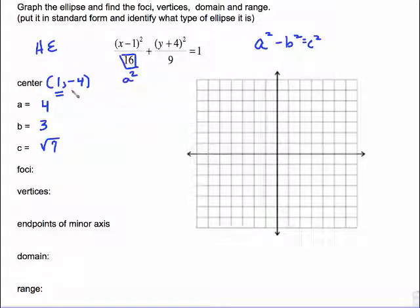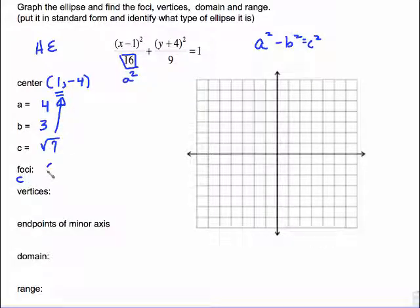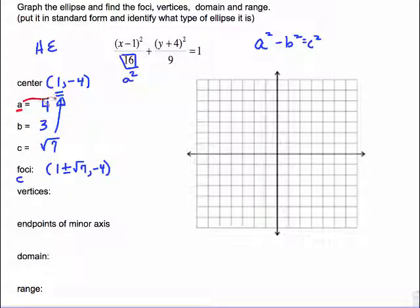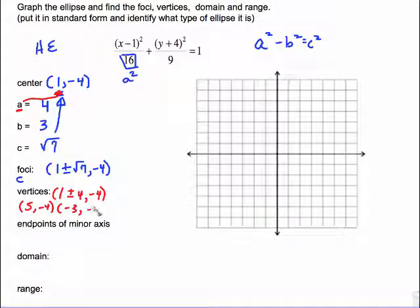Because it is a horizontal ellipse, I underline the horizontal component of the center to remind myself that I'm adding onto that to find both foci and vertices. The foci will be 1 plus or minus radical 7, negative 4. The vertices are found the same way but using the a value: 1 plus or minus 4, negative 4. Cleaning that up: 1 plus 4 is 5, negative 4; and 1 minus 4 is negative 3, negative 4.